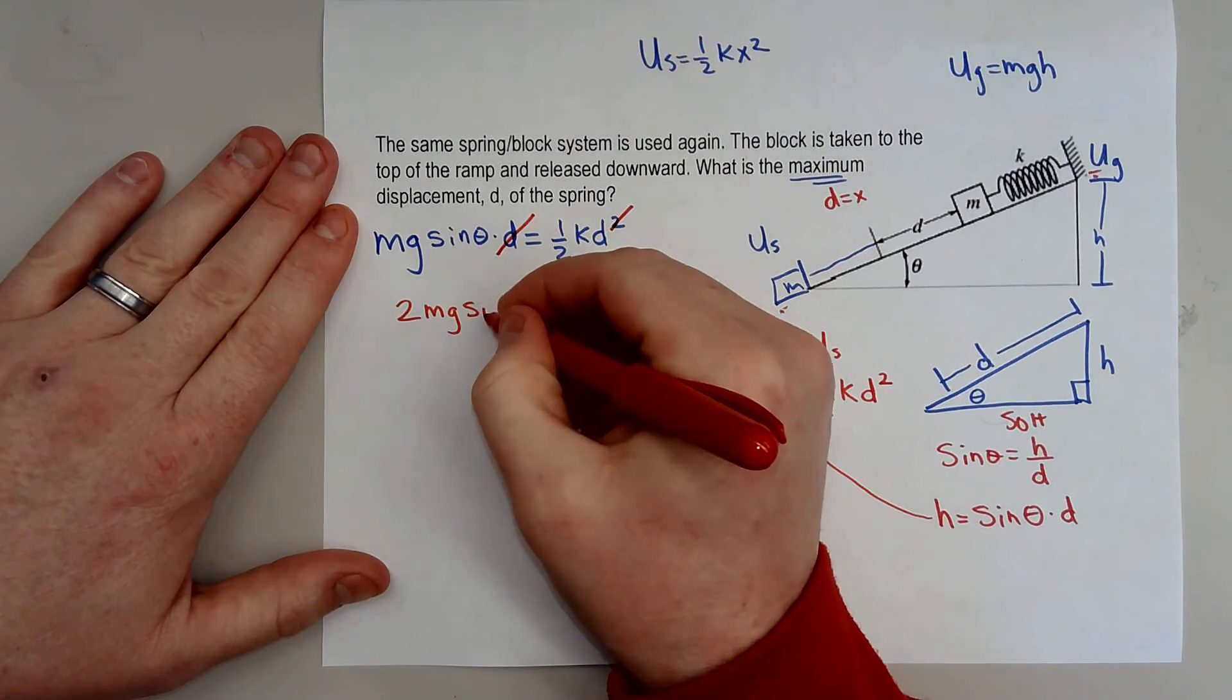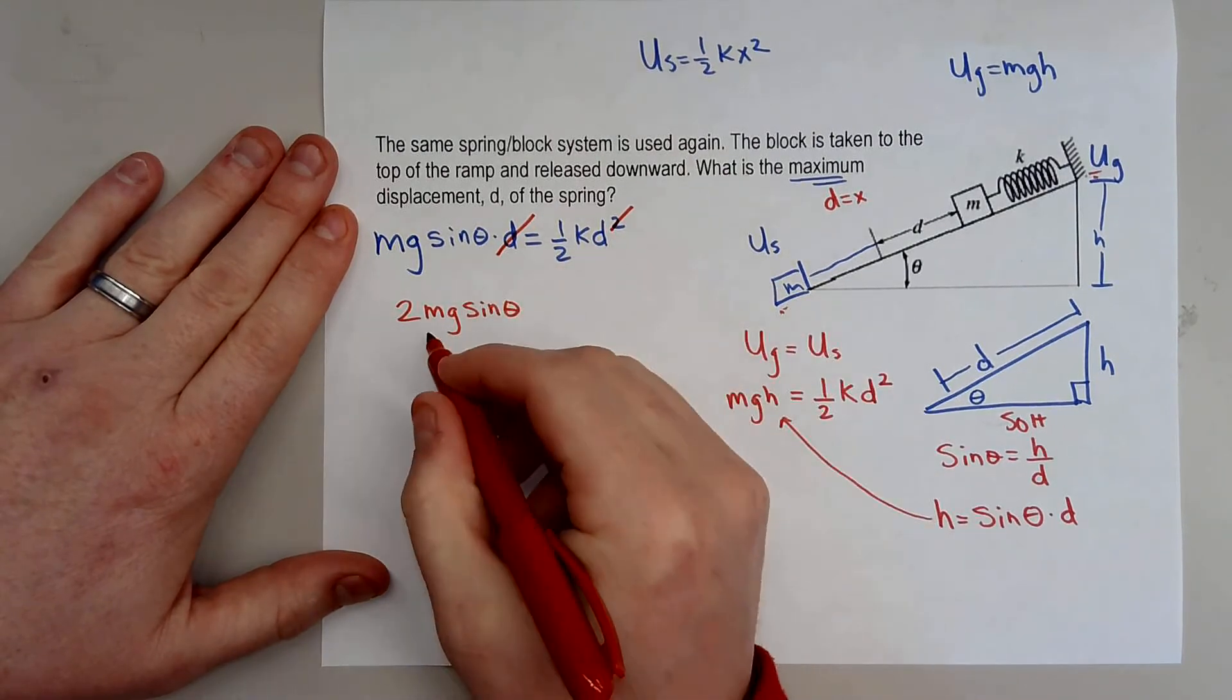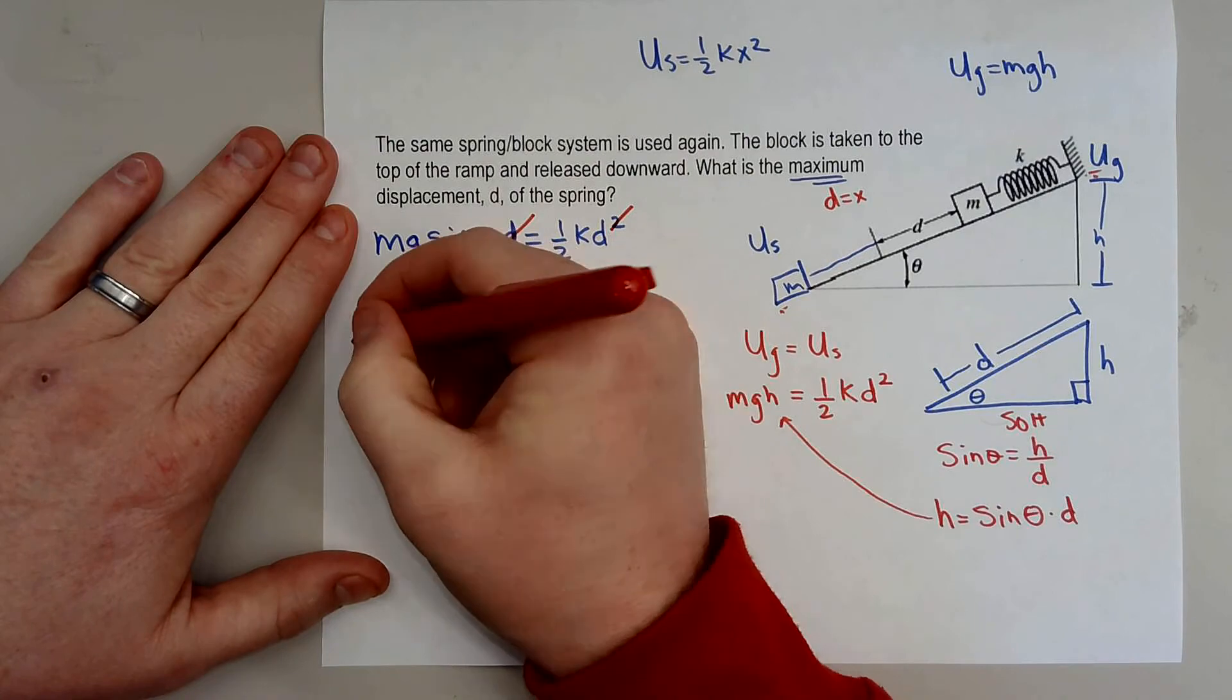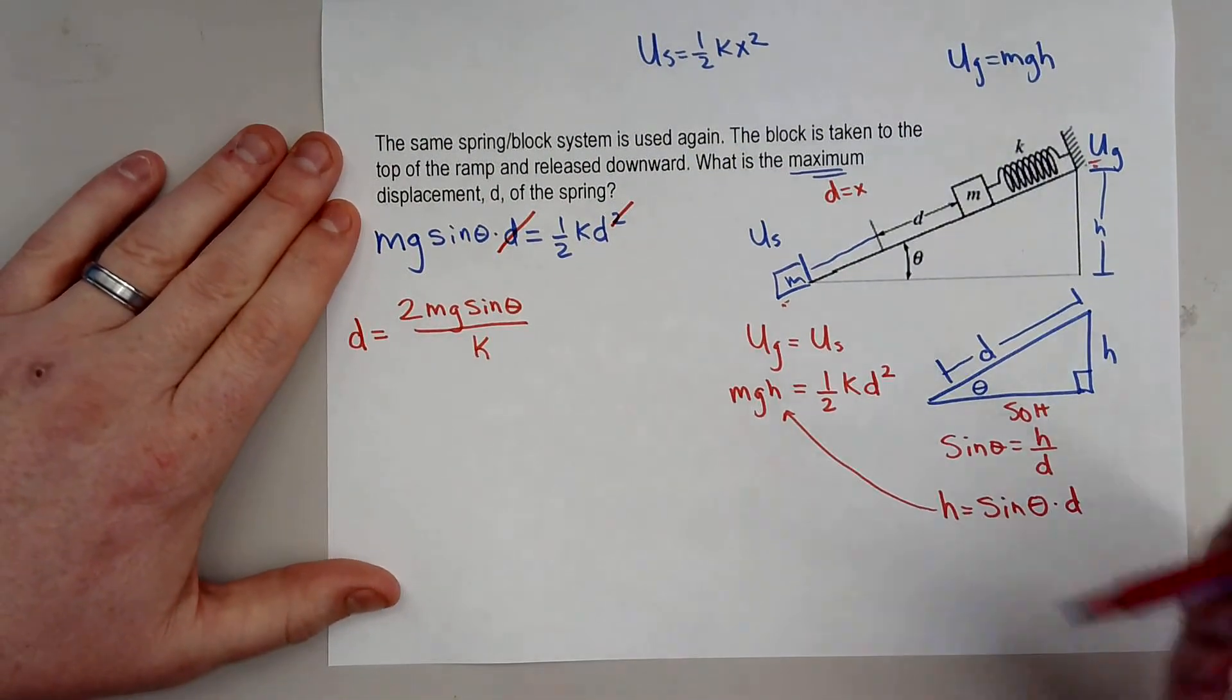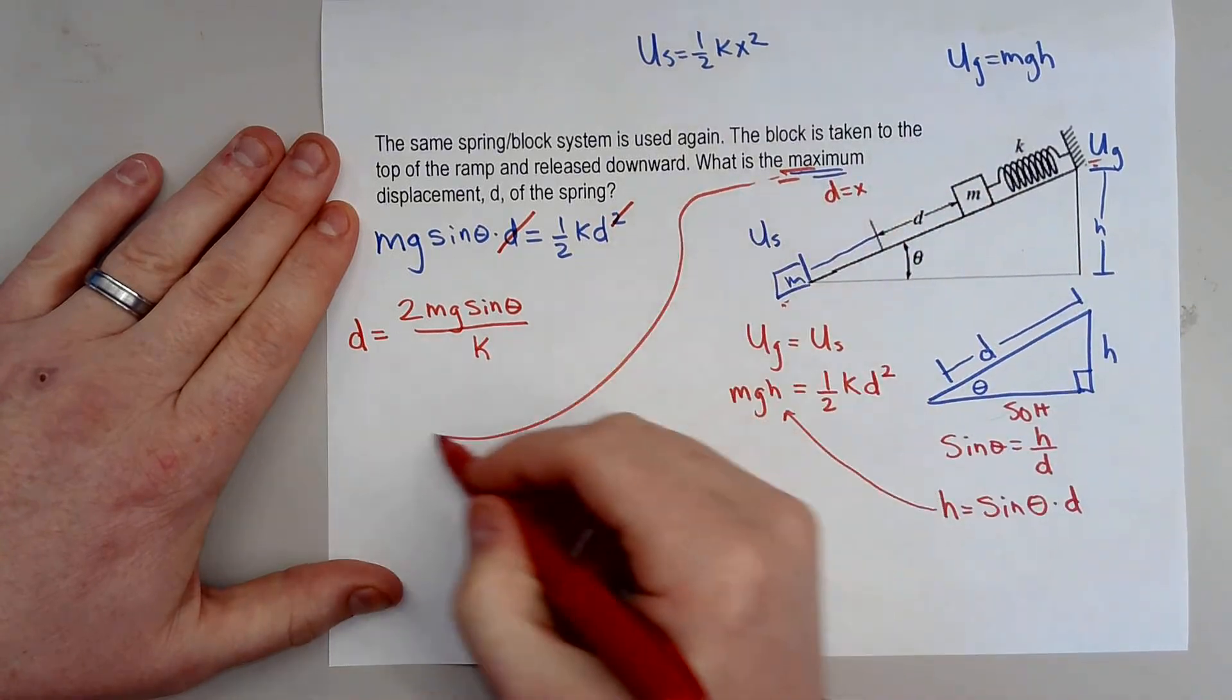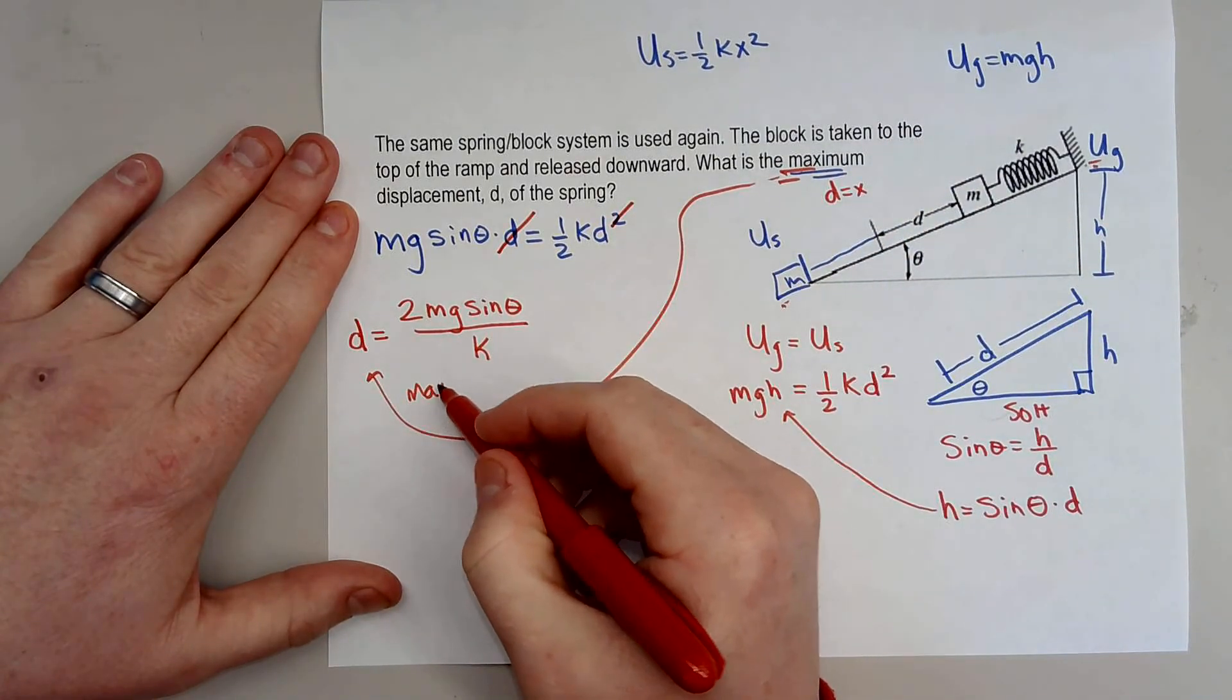2MG sine of theta divided by k and that will tell us the actual distance that this object will fall. So this will be the maximum, so this is the maximum displacement.